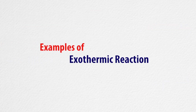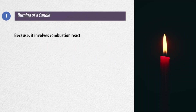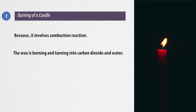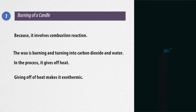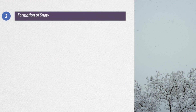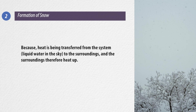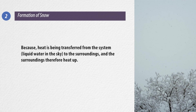Like endothermic reactions, exothermic reactions also have many examples. Such as burning of a candle — burning a candle involves a combustion reaction where wax burns and turns into carbon dioxide and water, and in the process gives off heat, making it exothermic. Formation of snow in clouds is also an exothermic process because heat is being transferred from the system to the surroundings, and the surroundings therefore heat up.